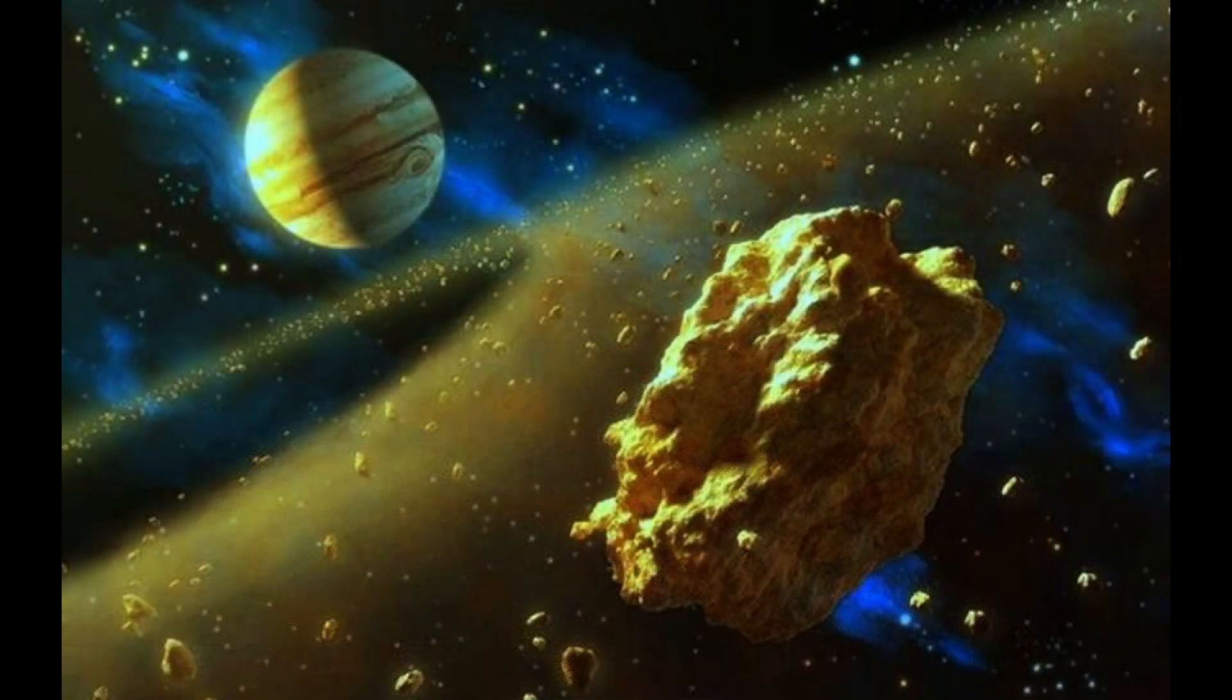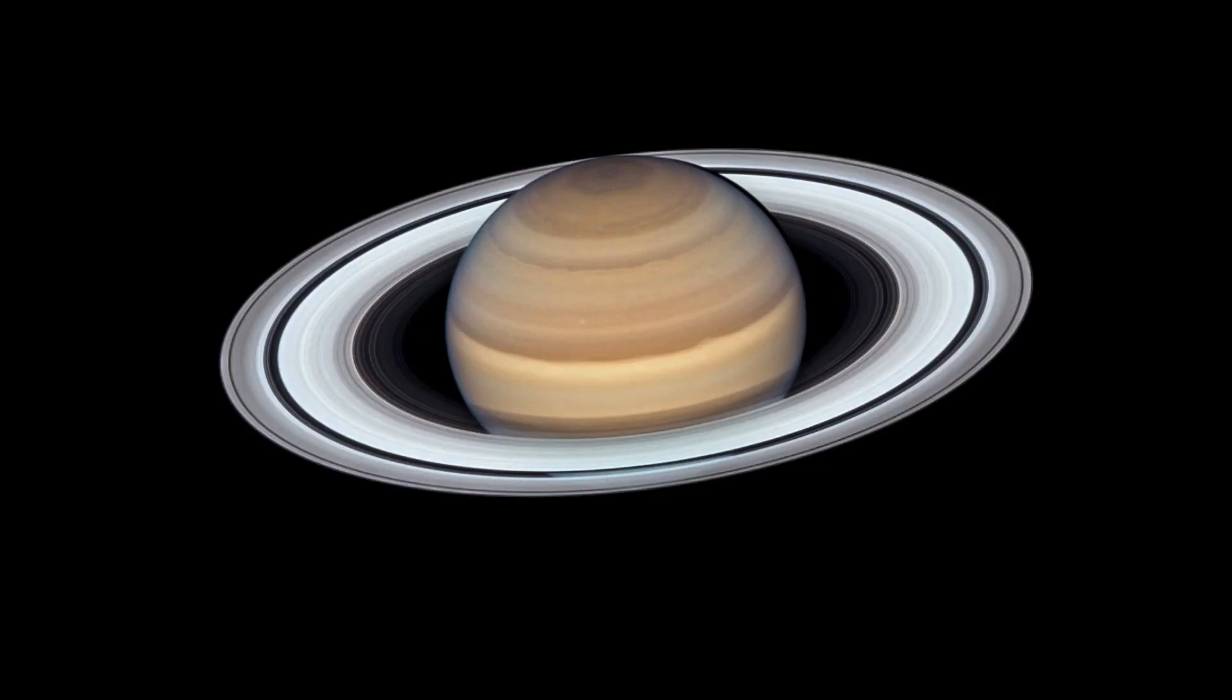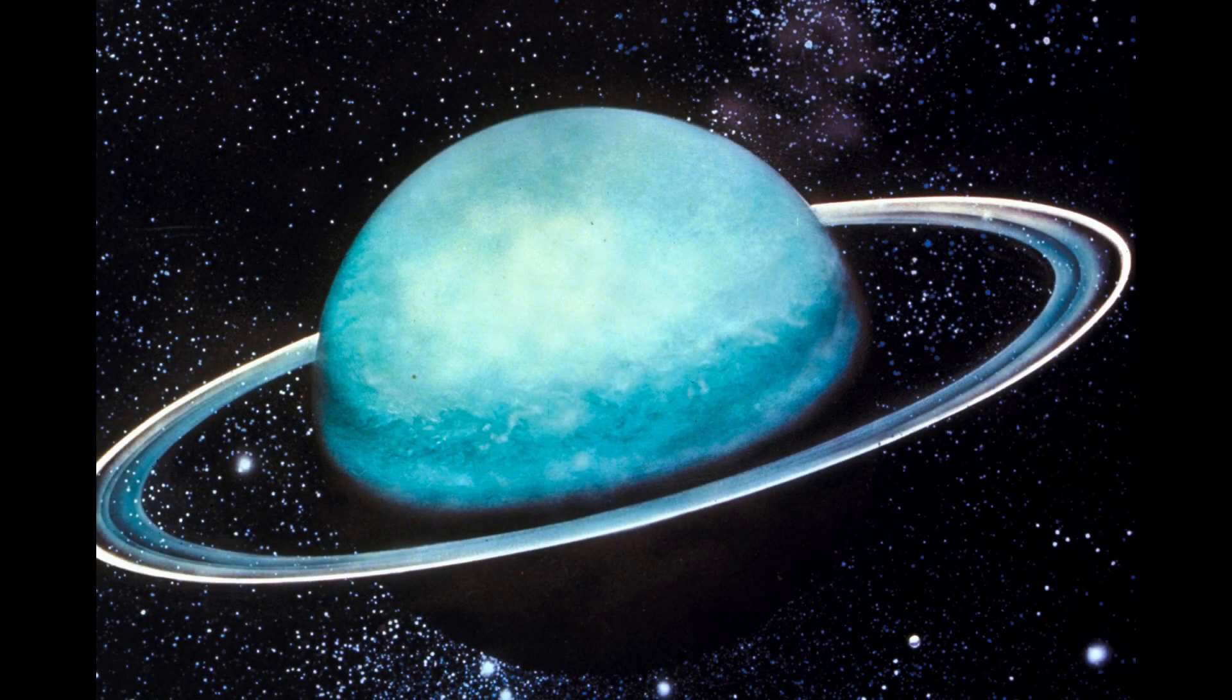The asteroid belt between Mars and Jupiter contains many small rocky objects. Saturn has the most extensive ring system in the solar system. Uranus is the only planet that rotates on its side.